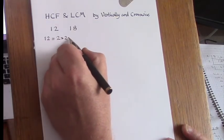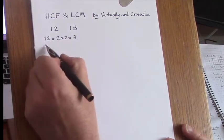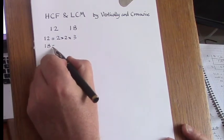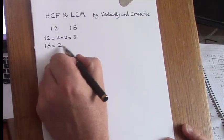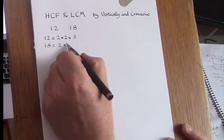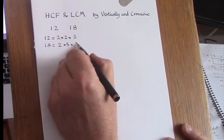So that's 2 times 2 times 3, and likewise to break down 18 into its prime factors, it's 2 times 3 times 3.